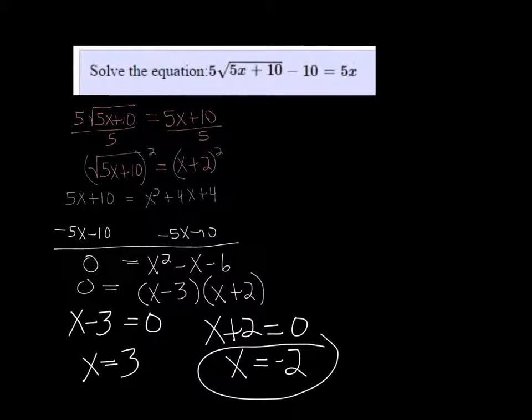And if I put 3 in there, I get 15 plus 10 is 25, so the square root of that is 5, so that's 25 minus 10 is 15, and 5 times 3.